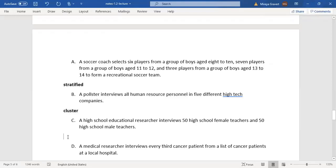C: A high school educational researcher interviews 50 high school female teachers and 50 high school male teachers. The population in this case are high school educators divided into two groups - male and female. They choose 50 male and 50 female, so this would be stratified.